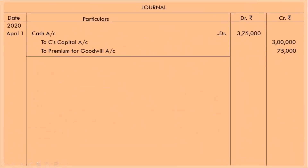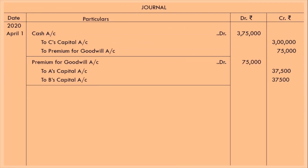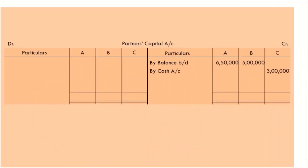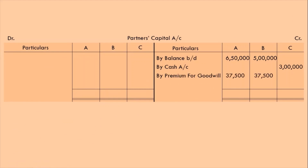Let's go back to journal entry and record this. A's capital account to be credited, B's capital account to be credited, and debit the premium for goodwill account. On combining the first and second entries, you can see that premium for goodwill is cancelled — once credited, then debited. But you will never post any combined entry; always make separate entries. Now let's record this in partners' capital account: by premium for goodwill, A and B, Rs 37,500 each.